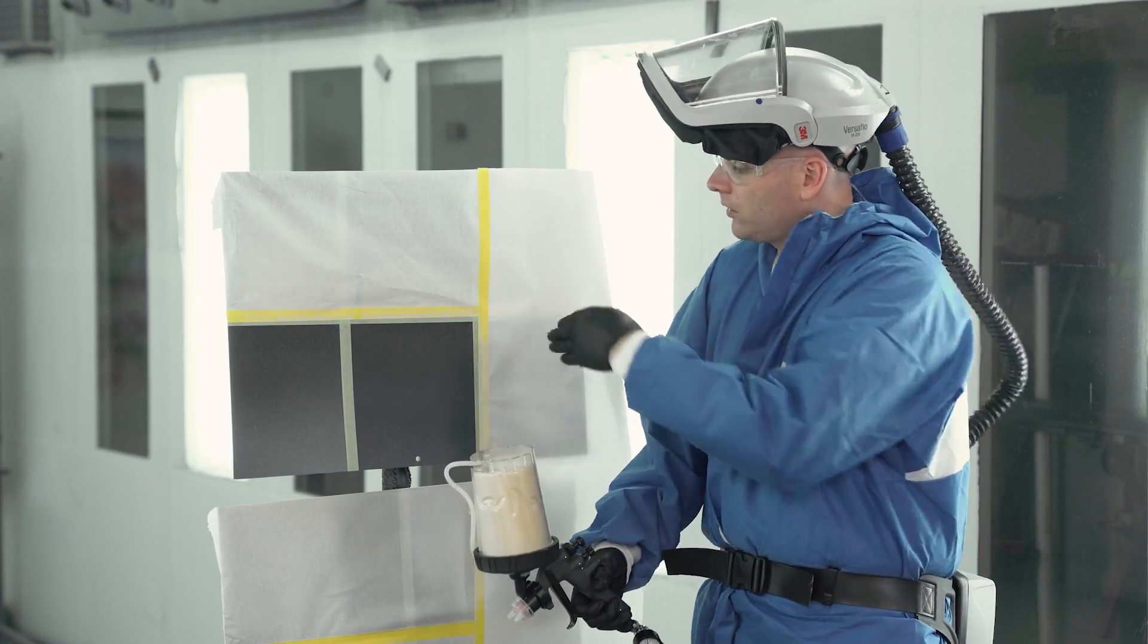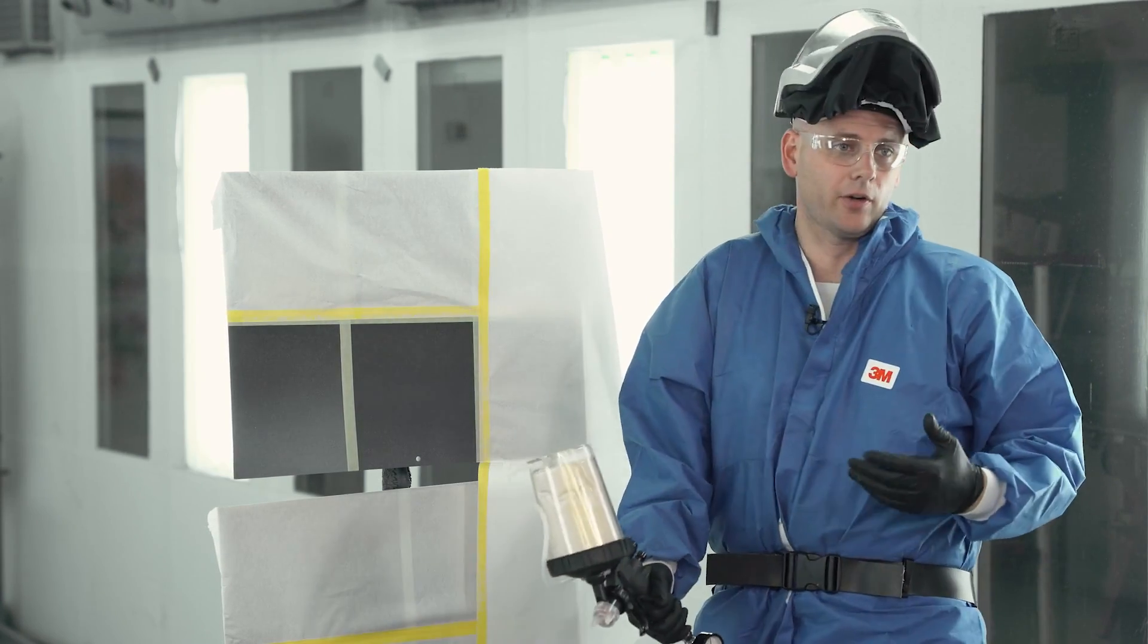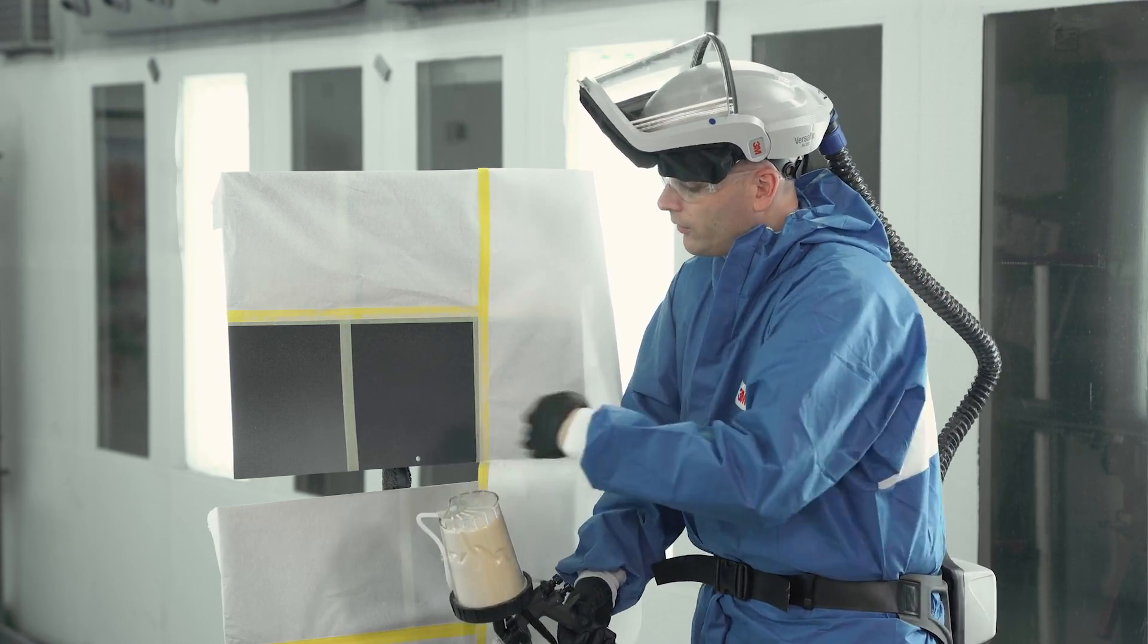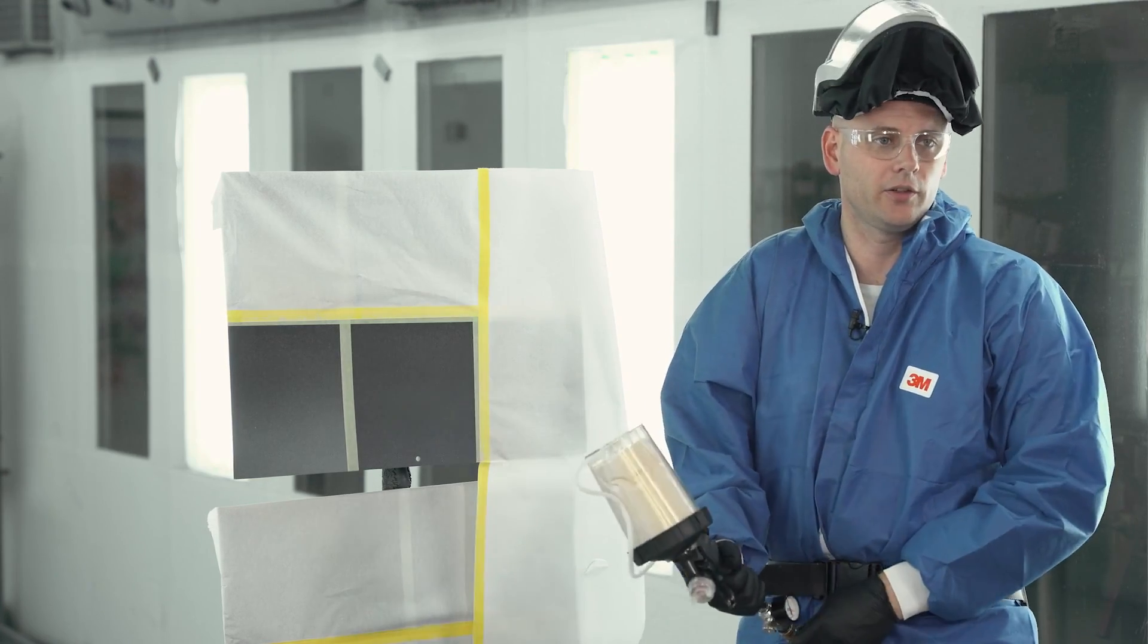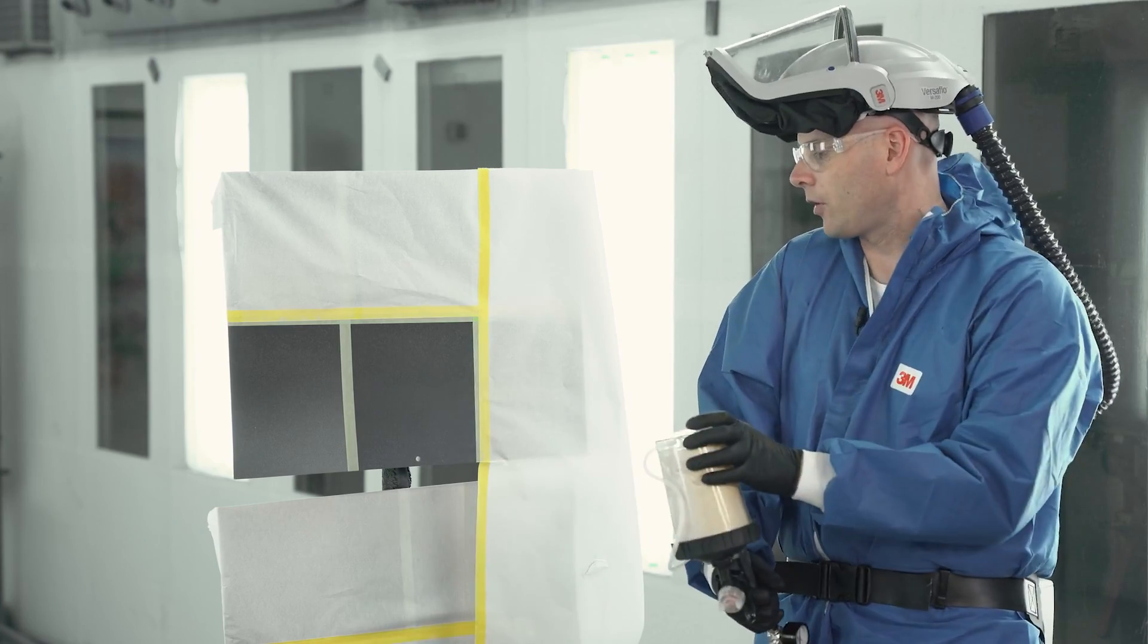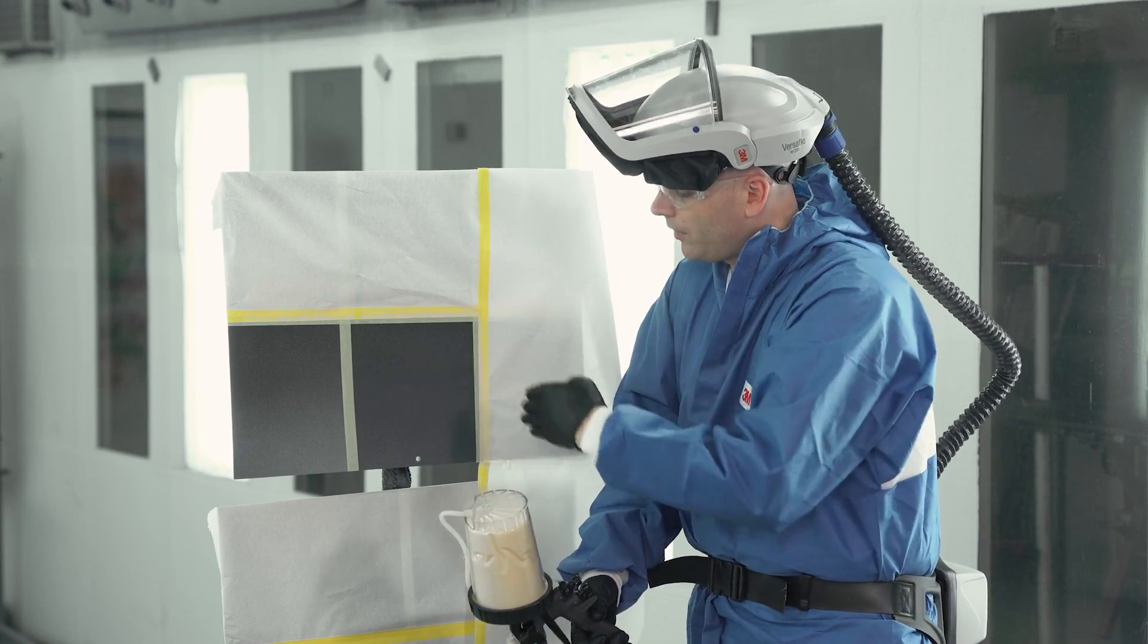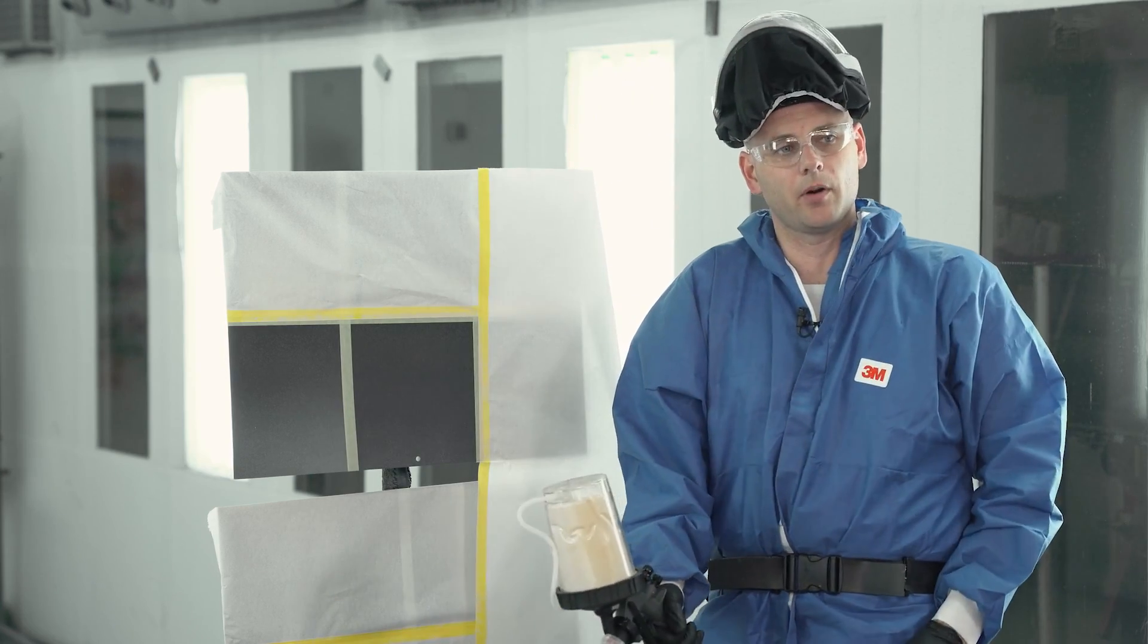So as you can see with my first coat, I went all the way up to the edge of my transition and I slowly moved the gun closer and closer as I worked my way down to get better coverage. We're going to let this flash for a minute or so and then we're going to go ahead and spray our next coat, which we're basically going to start a little bit further down and continue to build up our texture.